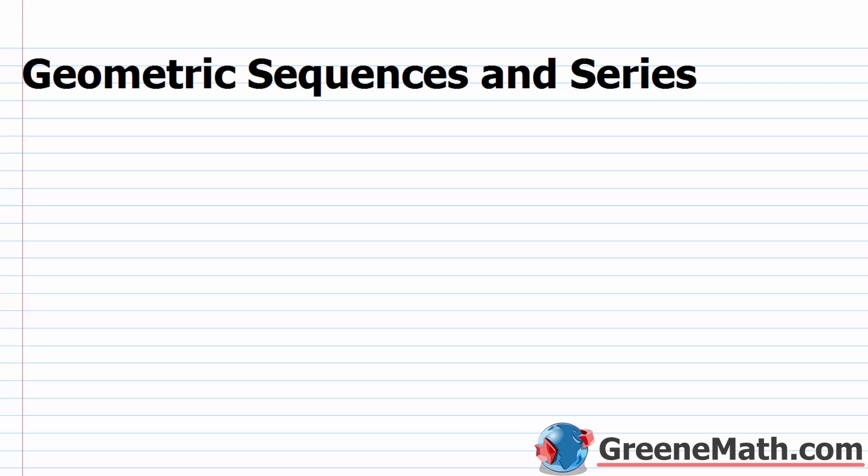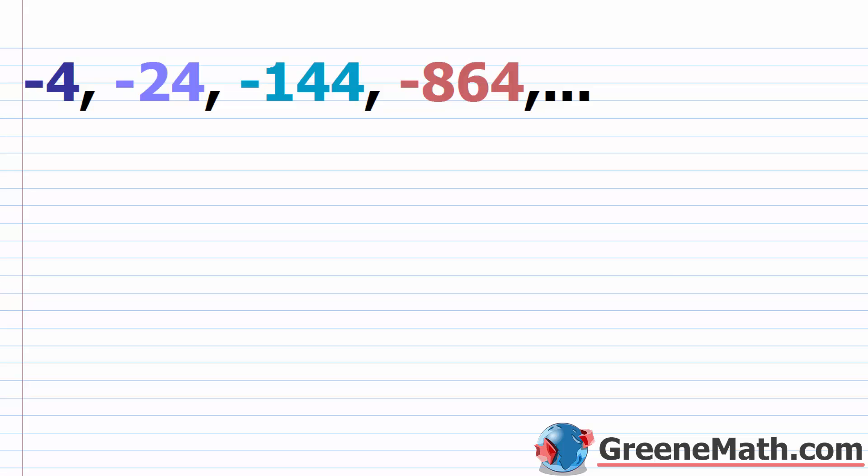In this lesson, we want to talk about geometric sequences and series. In our last lesson, we talked about the arithmetic sequence. With that, we found that each term after the first one can be found by taking the preceding term and adding some fixed number to it. The fixed number was known as the common difference, and we represented that with a lowercase d.